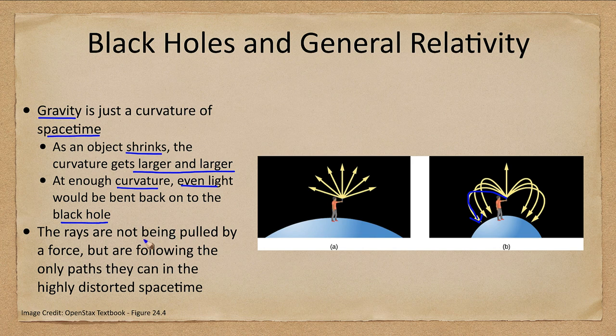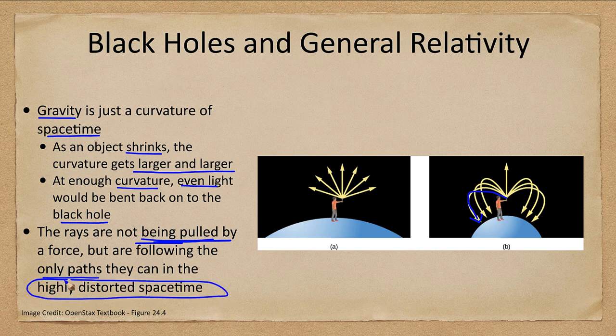Remember, these rays are not being pulled by a force. We talk about gravity as being a force under Newton, but under Einstein, gravity is the bending of space and time. These light rays are following the only path they can in this very highly distorted space-time around a compact object.